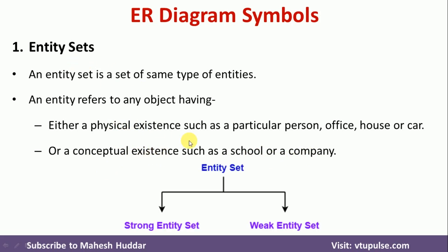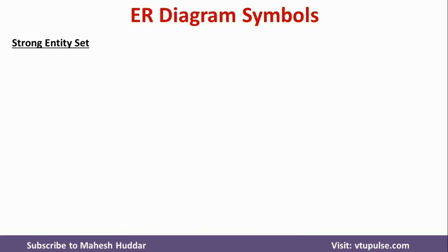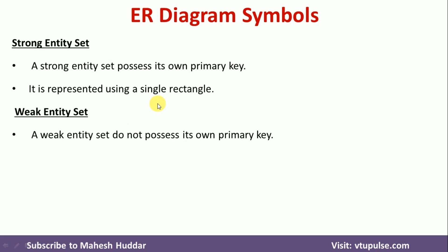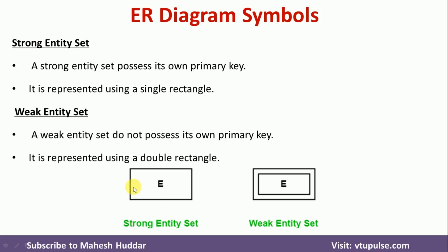There are two types of entity sets: the first is a strong entity set and the second is a weak entity set. A strong entity set possesses its own primary key, which can be used to uniquely identify the rows or data in the table, and it is represented with a single rectangle. A weak entity set does not possess its own primary key and is represented with a double rectangle.